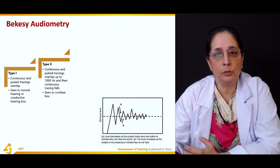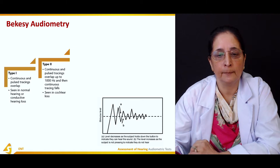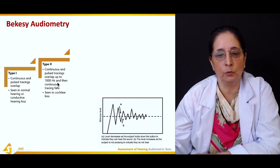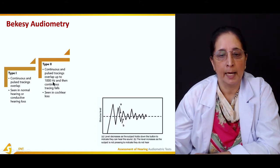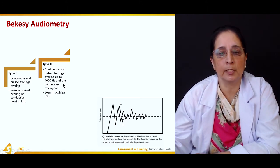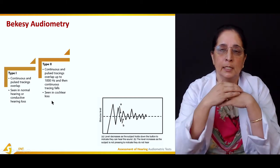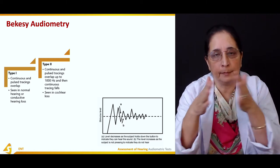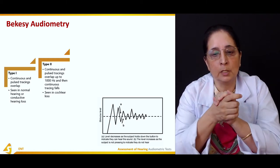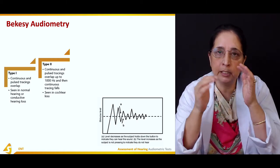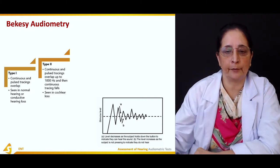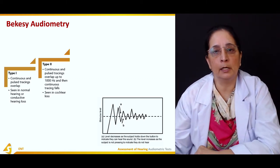In VEXI Type 2, the continuous and pulsed tracings overlap up to 1000 Hz, and then the continuous tracing falls away, leaving only the pulsed tracing. This pattern is seen in cochlear hearing loss.